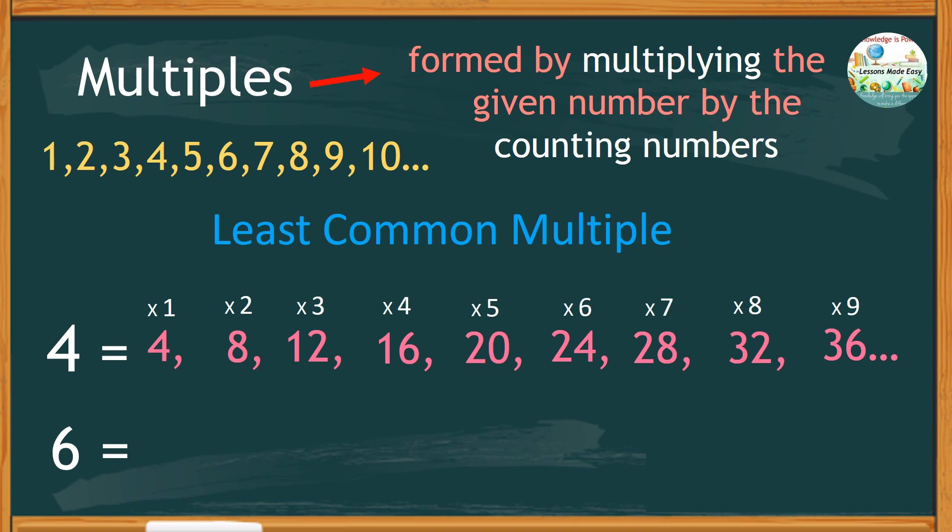Another way to find the multiples of a number is by repeated addition. And so, to find the multiples of six, we start from six, and then repeatedly add by six to get the next multiple, which is twelve. Plus six is eighteen. Plus six, that would give us twenty-four. Plus six, that makes thirty. Plus six is thirty-six. Plus six is forty-two, and so on.